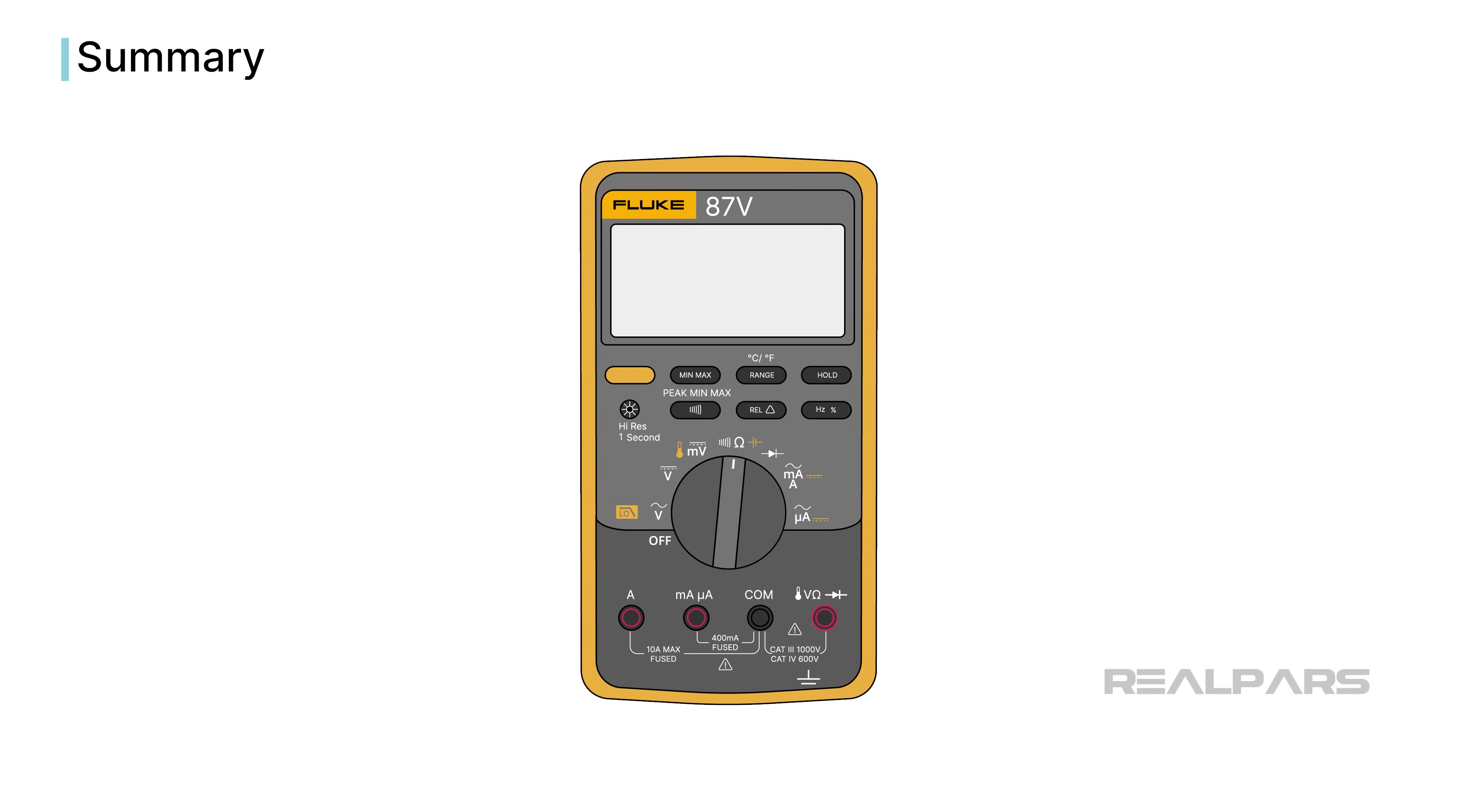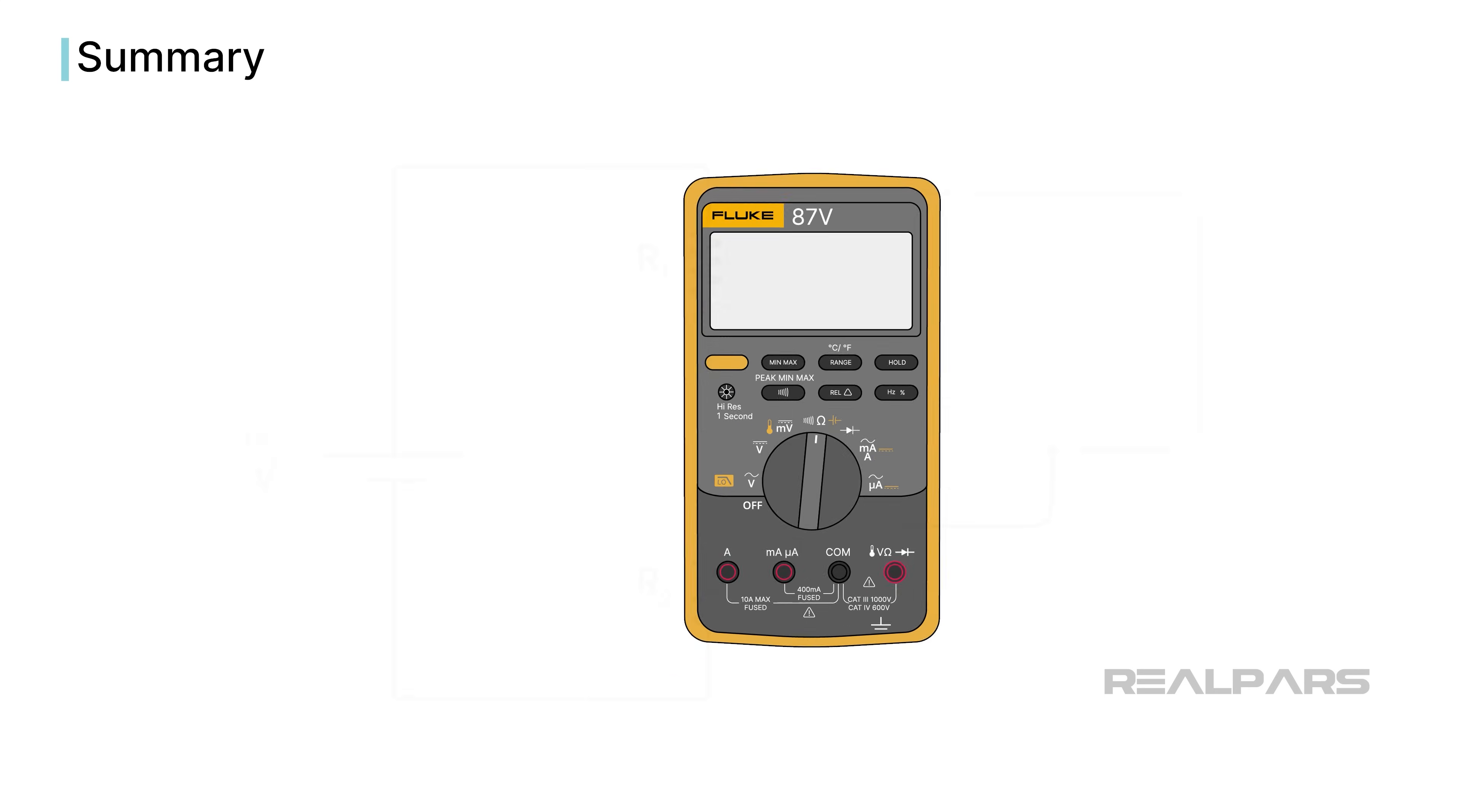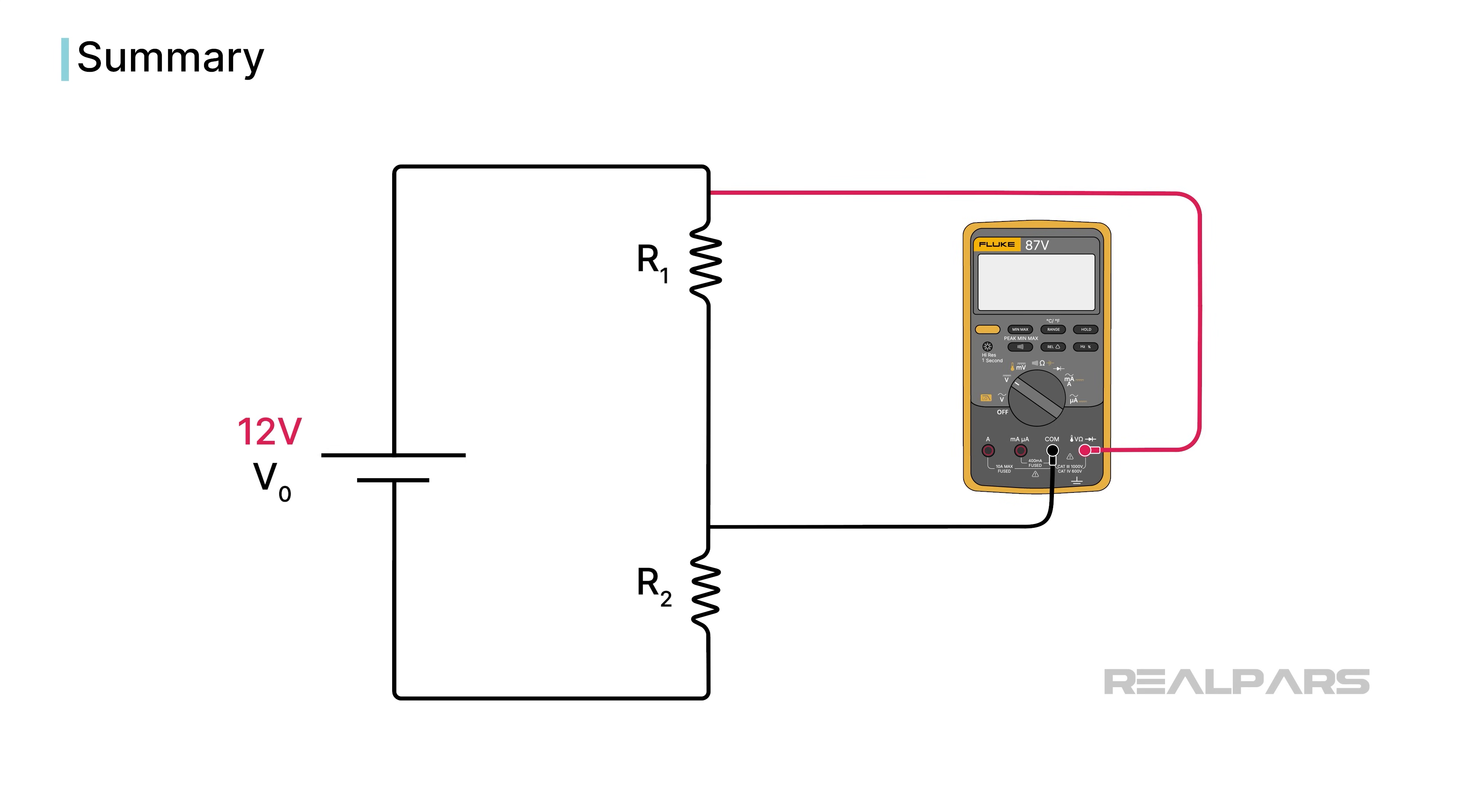Okay, let's summarize what we've discussed. Voltage is measured by connecting the DMM in parallel to the circuit. A voltmeter has input impedance to prevent errors like voltmeter loading.